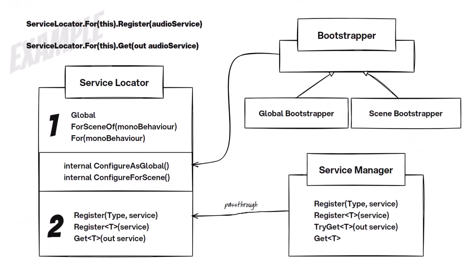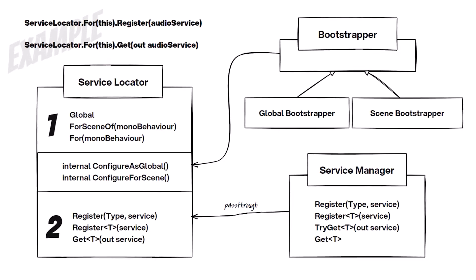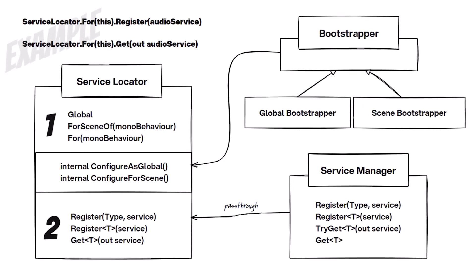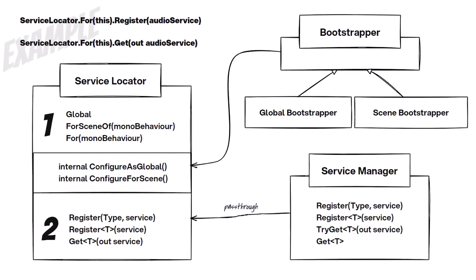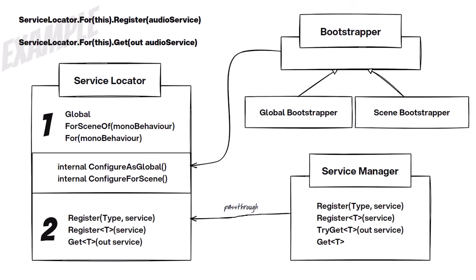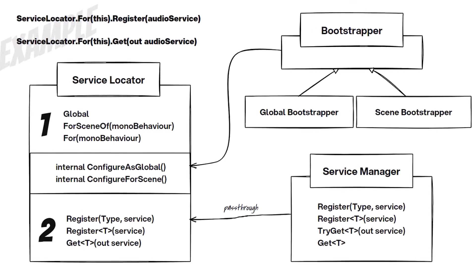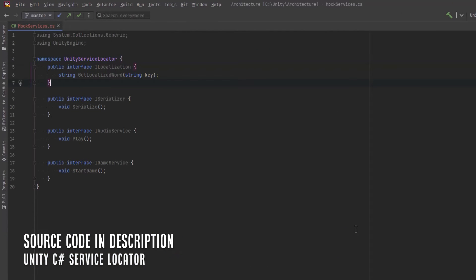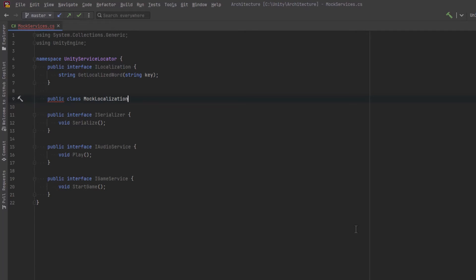I've split the system into three different classes. There will be a manager class that does the storage and retrieval of the different services. The service locator class will be the class we interact with the most from our various game objects in the game. We're going to make some bootstrappers that will do some configuration when we want a locator of a different type. I've created a few interfaces and I'm just going to make some mock services so that we can test out what it's like to look for various services from our game objects.